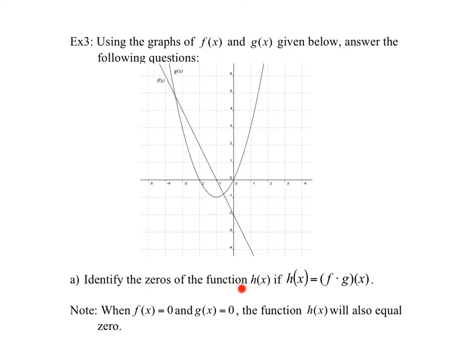All right, identify all the zeros of the function h of x if h is f times g. So if you remember from the sum and difference, when you do something like this, all you're doing is multiplying, or in this case multiplying, the y values. Okay, so for this to be a zero, either f or g have to be equal to zero. Okay, so therefore, in this case, since g of x is equal to zero at two and zero, and f of x is equal to zero at one, those would be the zeros.